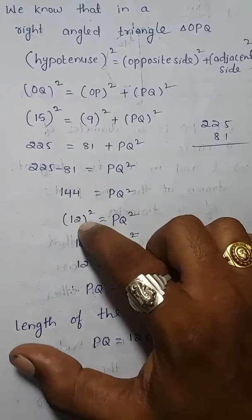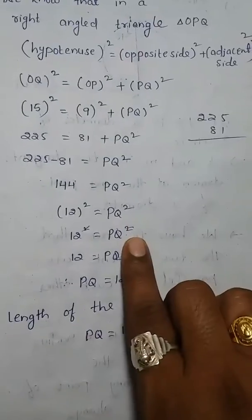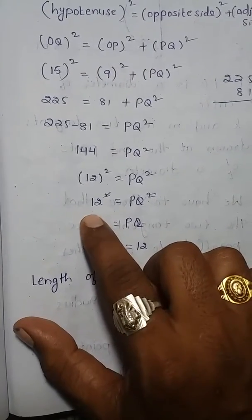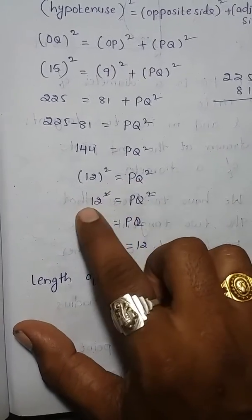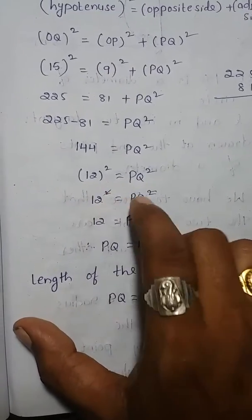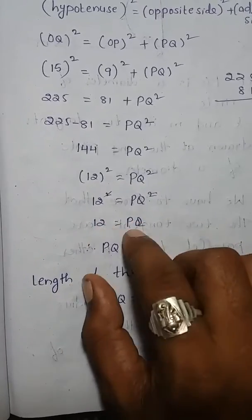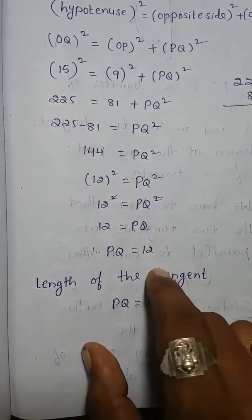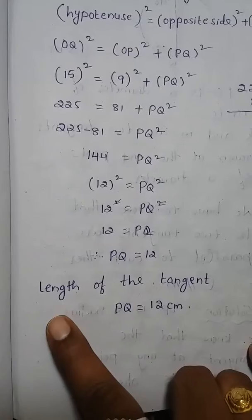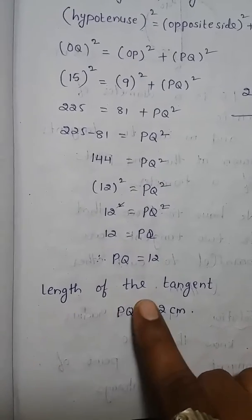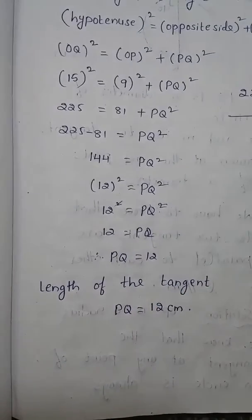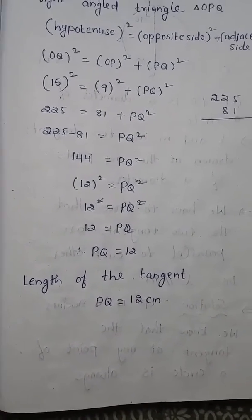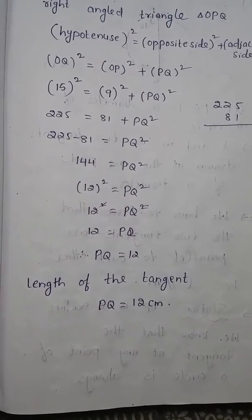144 is equal to 12 squared, so PQ squared equals 12 squared. The squares cancel, therefore PQ equals 12 centimeters. Therefore, the length of the tangent PQ is equal to 12 centimeters.